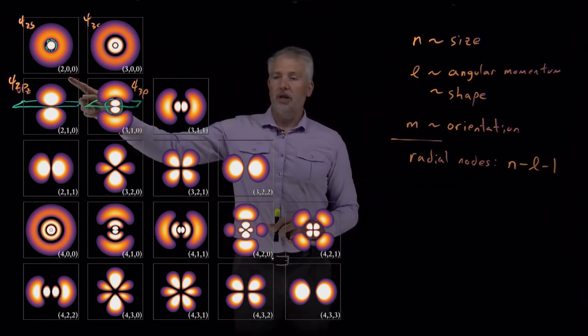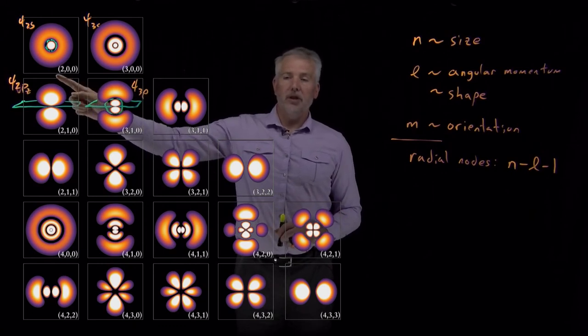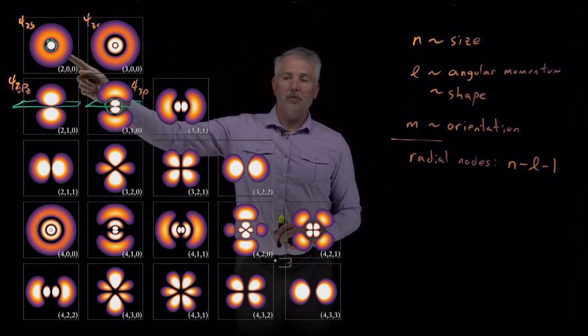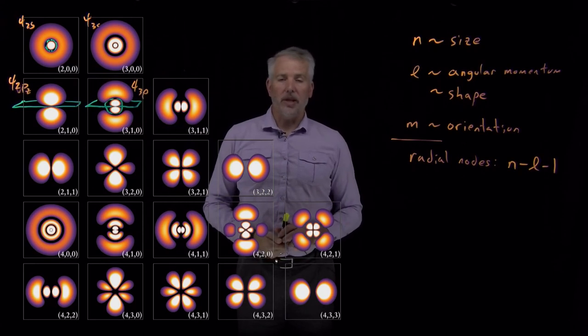For example, for this 2, 0, 0 wave function, 2 minus 0 minus 1 gives me the one radial node that the 2s orbital has.